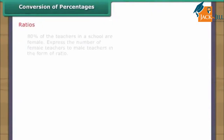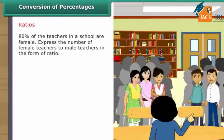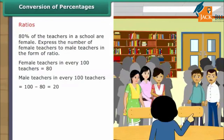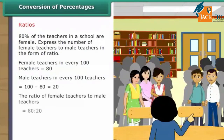Ratios: 80% of the teachers in a school are female. Female teachers in every 100 teachers is 80. Male teachers in every 100 teachers = 100 − 80 = 20. The ratio of female teachers to male teachers = 80 is to 20 = 8 is to 2 = 4 is to 1.